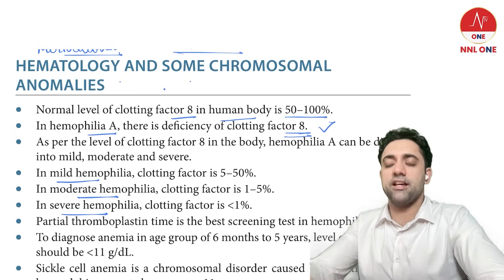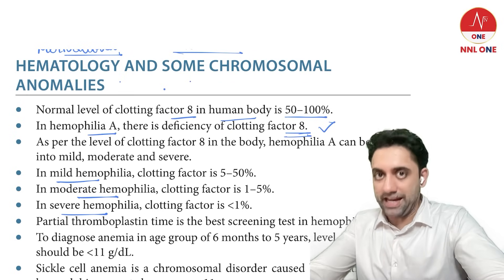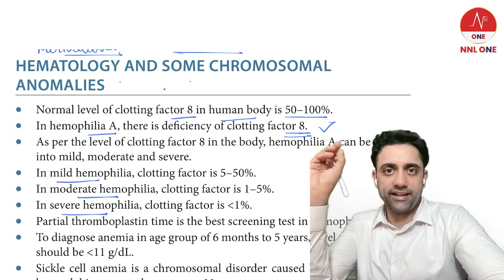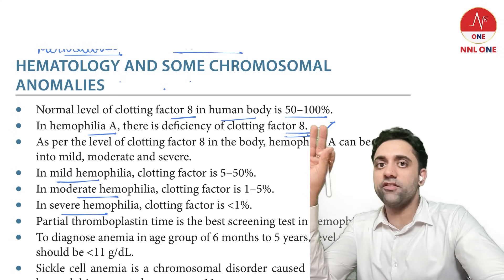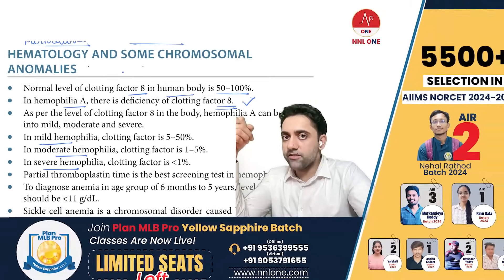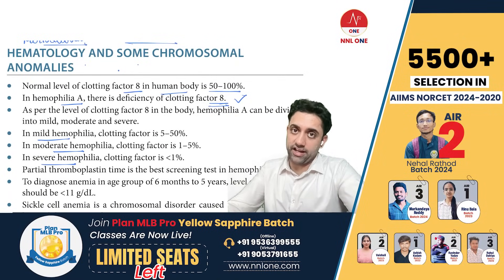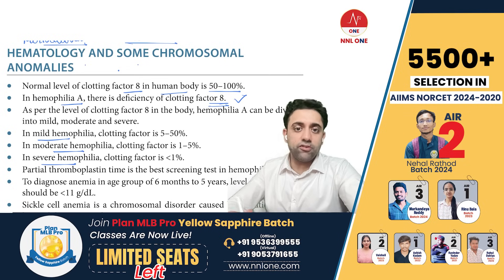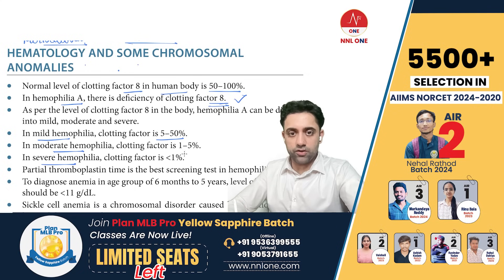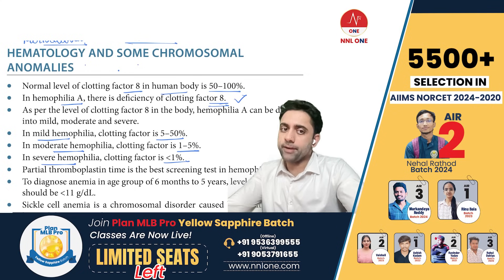The normal level of factor VIII in our body is 50 to 100 percent. If factor VIII deficiency occurs, the result is hemophilia. In mild hemophilia, the clotting factor level is 5 to 50 percent. In moderate hemophilia, it is 1 to 5 percent. In severe hemophilia, the clotting factor is less than 1 percent.